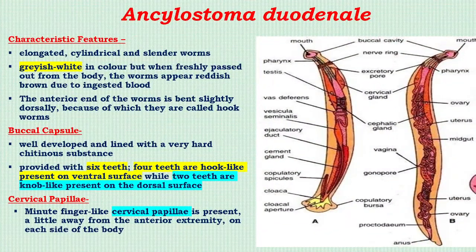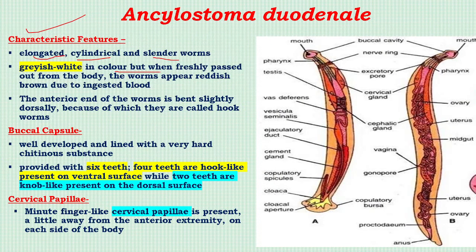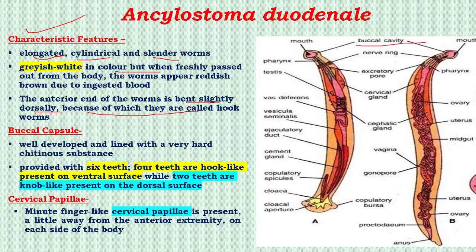As characteristic features, these are elongated, cylindrical parasites, grayish-white in color in fresh form but becoming reddish-brown due to ingested blood. The anterior end of the parasite bends slightly dorsally, which is why they are known as hookworms. The buccal capsule is a very important, well-developed structure lined with a hard chitinous material.